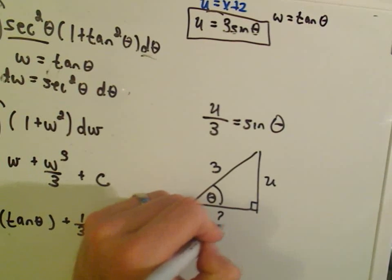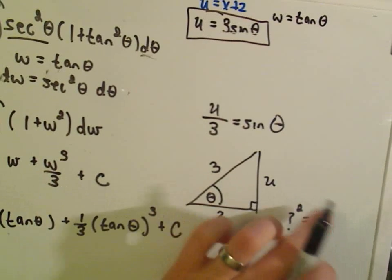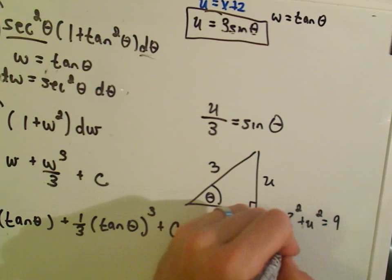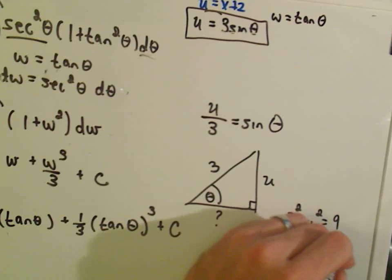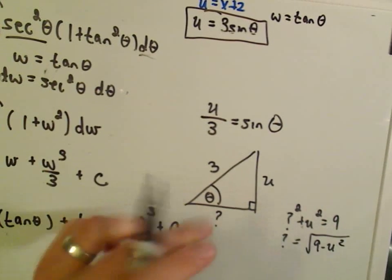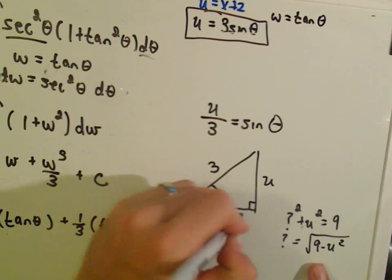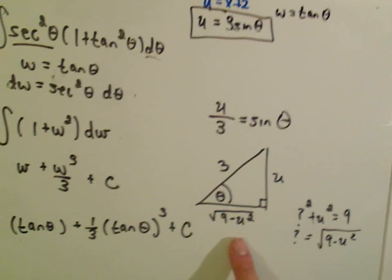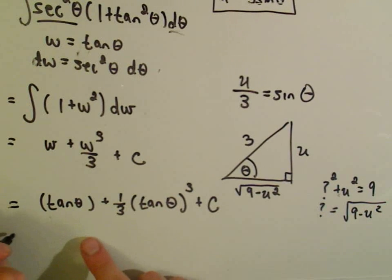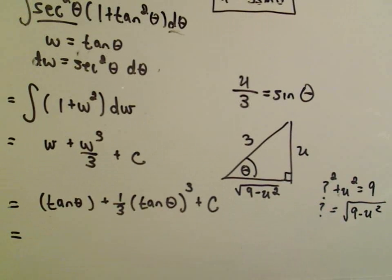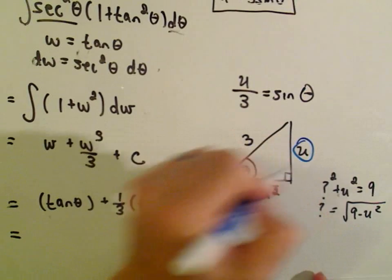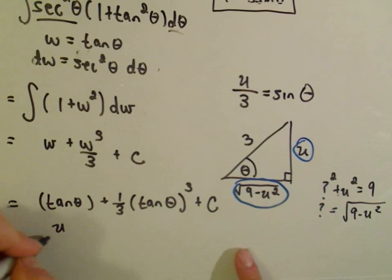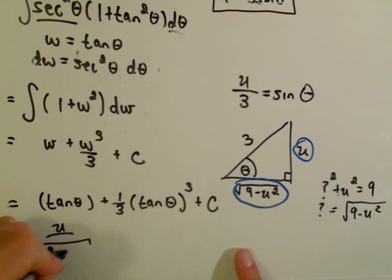Then we have to figure out the missing side using the Pythagorean theorem. The missing side squared plus u squared equals 3 squared, or 9. Solving, we get the missing side equals the square root of 9 minus u squared — which is actually the square root we were trying to replace earlier. From this we can read off tangent of theta, because tangent is opposite over adjacent, so tangent theta equals u over the square root of 9 minus u squared.